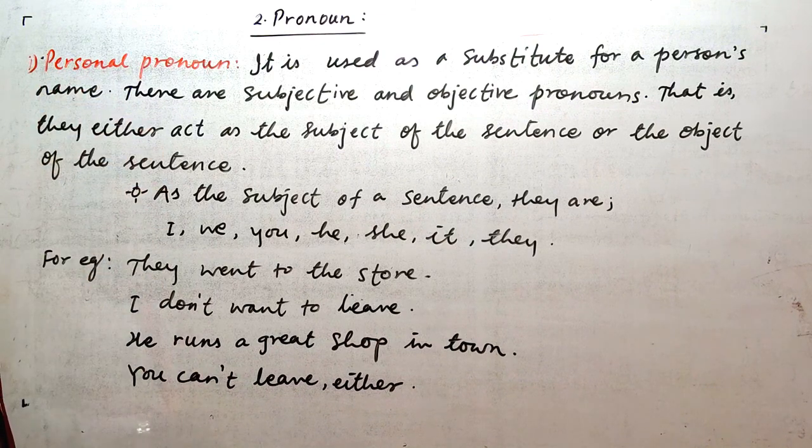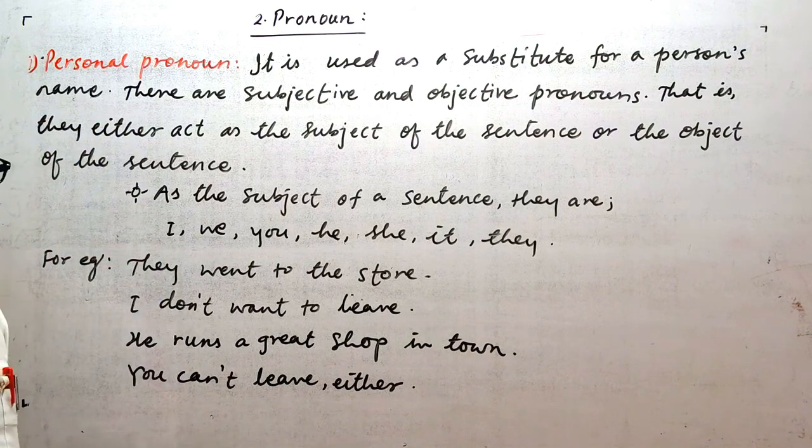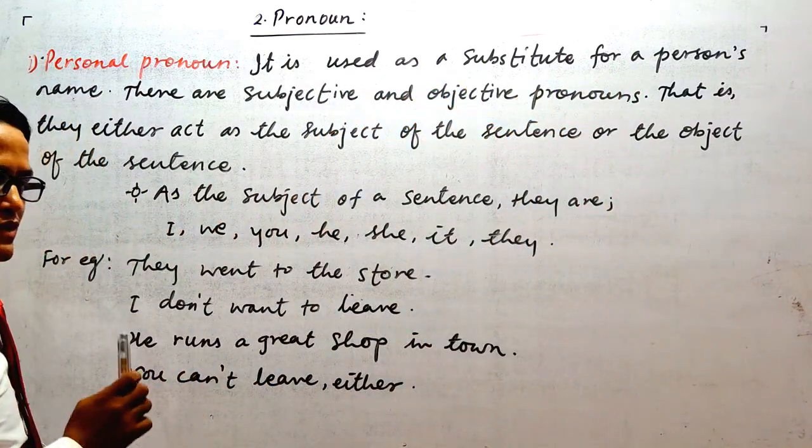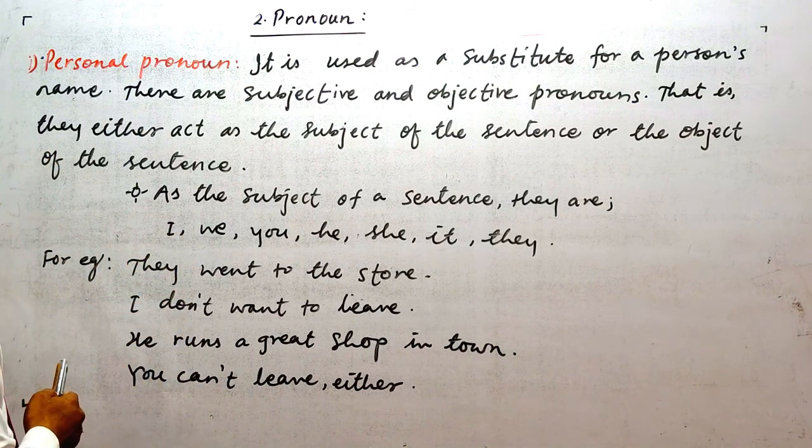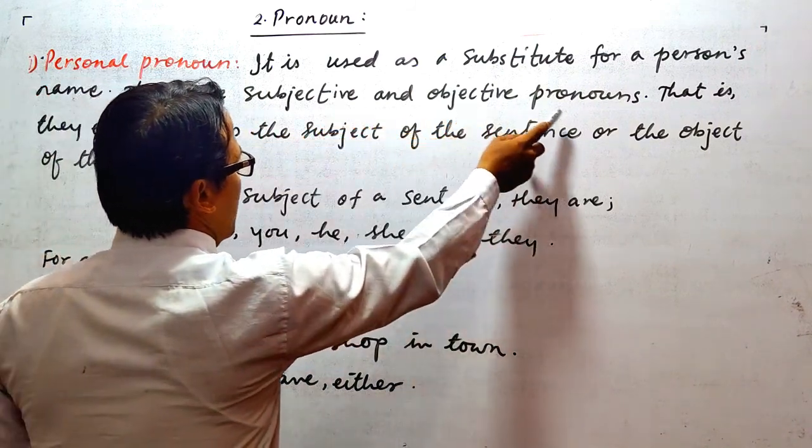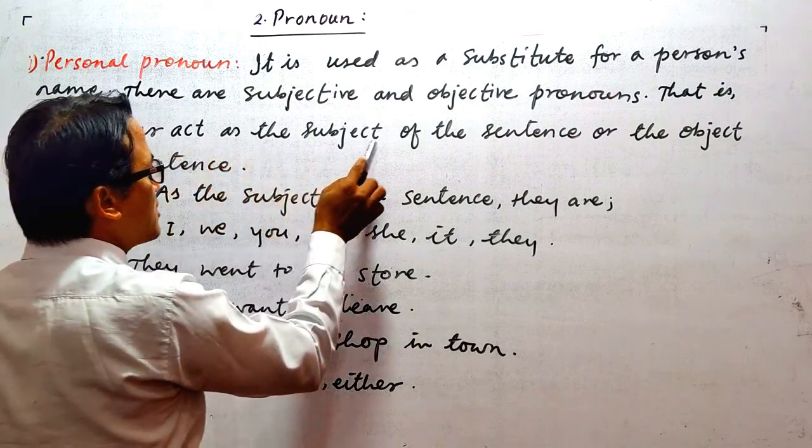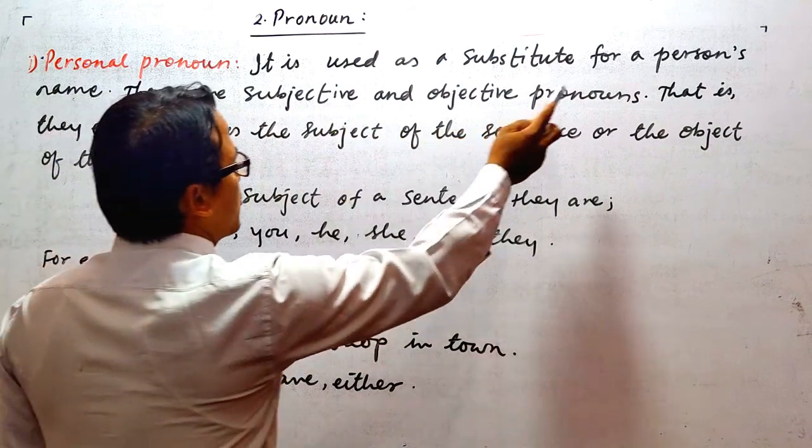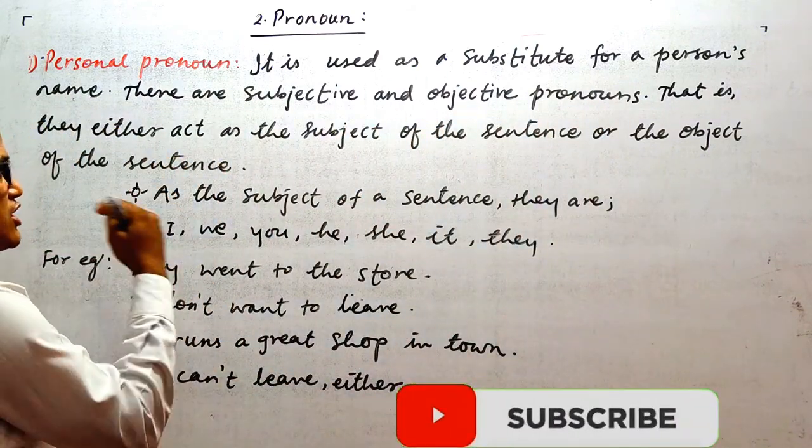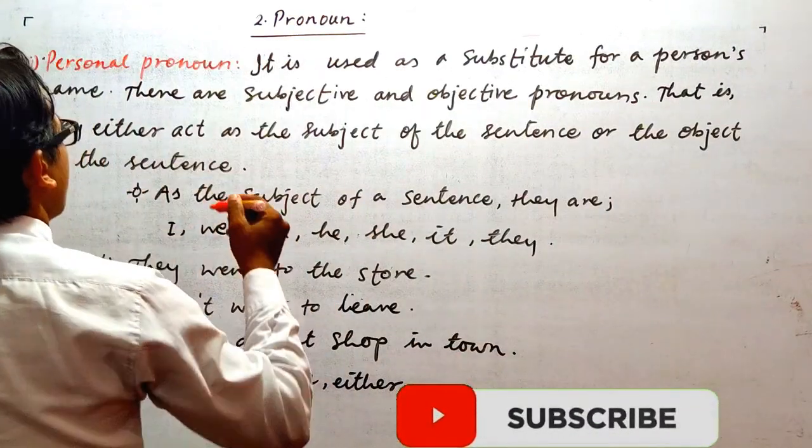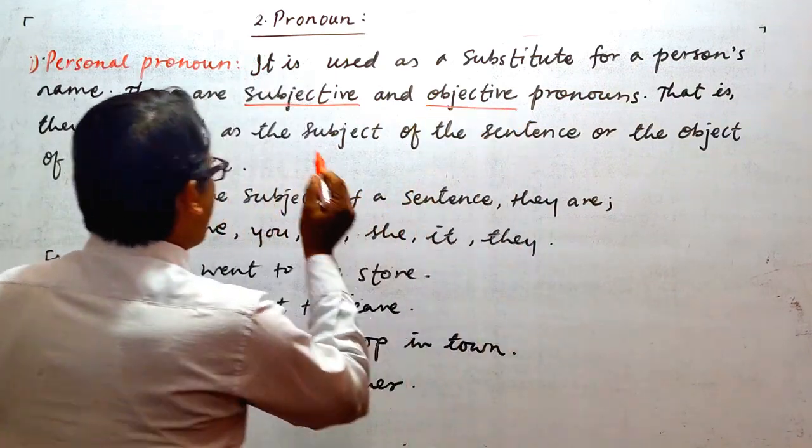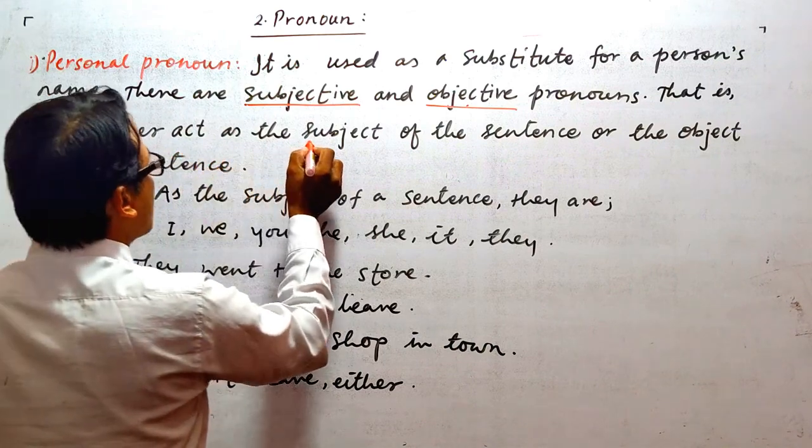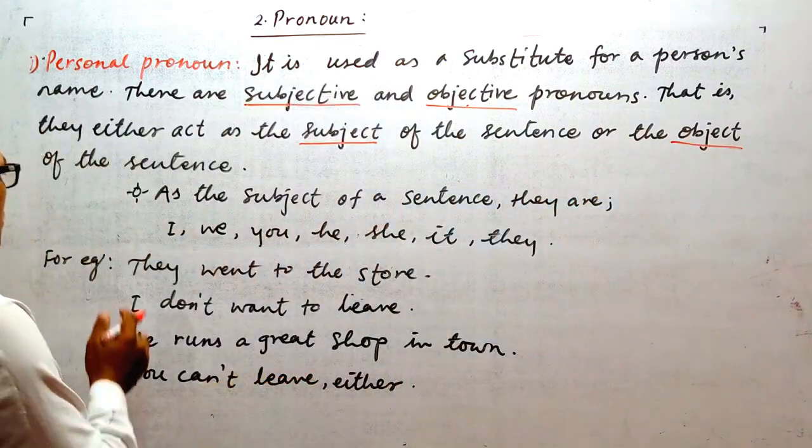Look at it. So I am going to describe personal pronoun. What is personal pronoun? It is used as a substitute for a person's name. There are subjective and objective pronouns. That is, they either act as a subject of the sentence or the object of the sentence. So now you can see the example here.